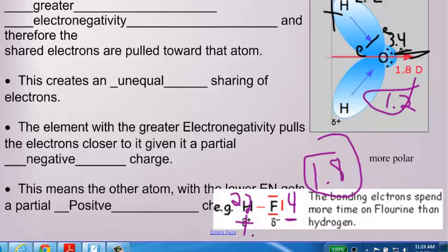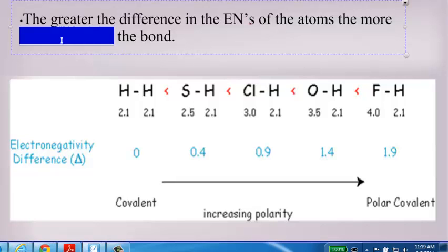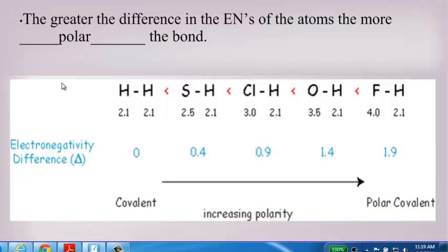And that's what we have at the top of our next page. The greater the difference in electronegativities of the atoms, the more polar the bond is.